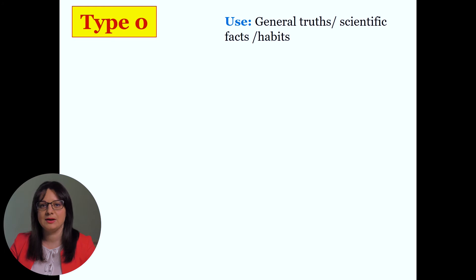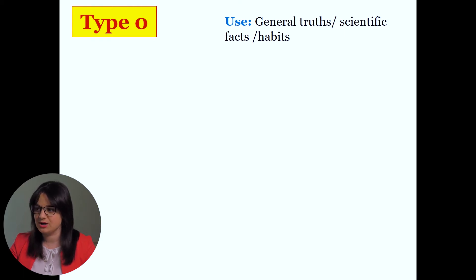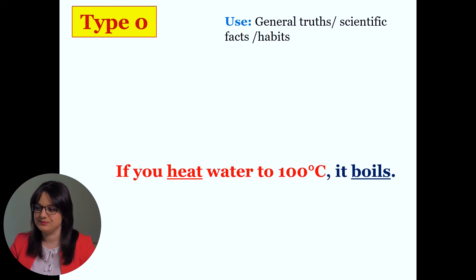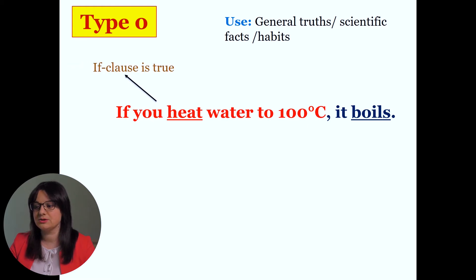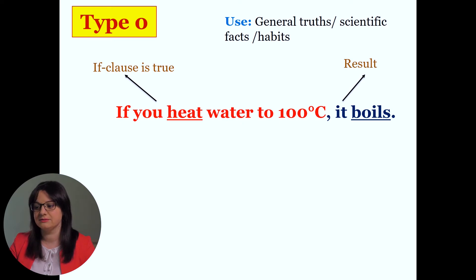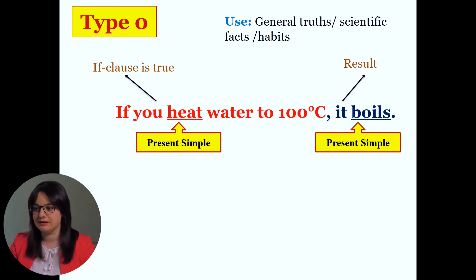Let's revise type 0. Conditional sentences type 0 express general truths, scientific facts, and habits. Look at the example: 'If you heat water to 100 degrees centigrade, it boils.' The first part, 'if you heat water to 100 degrees centigrade,' is the if clause — it's something true, a general truth. The second part, 'it boils,' is the result. In conditional sentences type 0, we use present simple in the IF clause and present simple in the main clause as well.